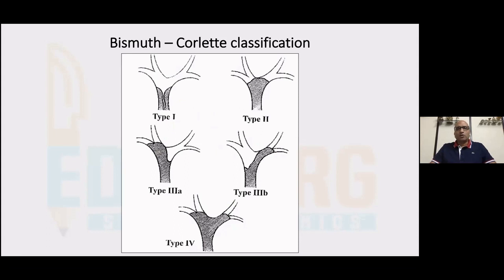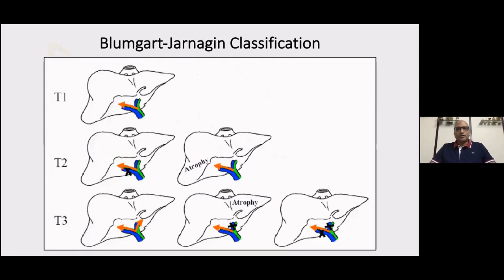Much has been said about the Bismuth-Corlette classification. But this is something more — a working classification: the Blumgart-Jarnagin classification from MSKCC. T1 is the standard Bismuth-Corlette classification with ipsilateral involvement, no vascular involvement, and no lobar atrophy. T2 is ipsilateral disease with either portal vein involvement or lobar atrophy on the ipsilateral side.